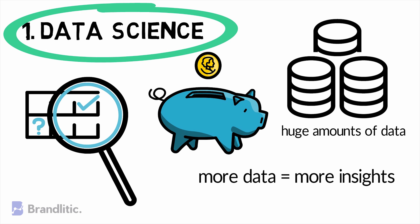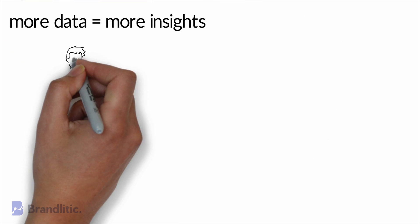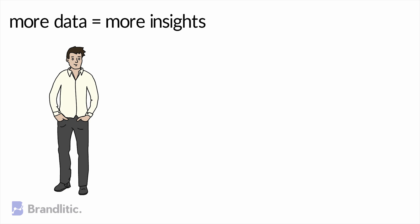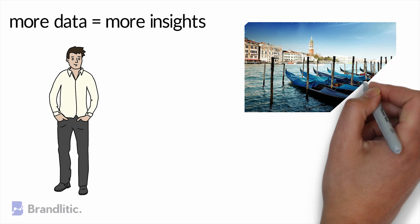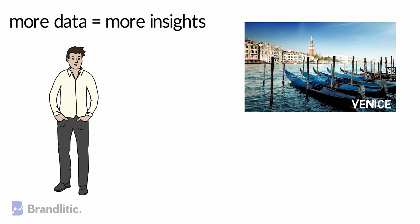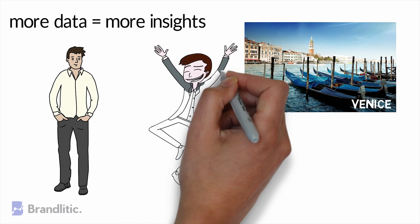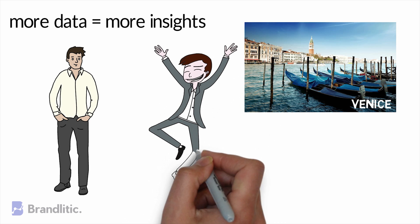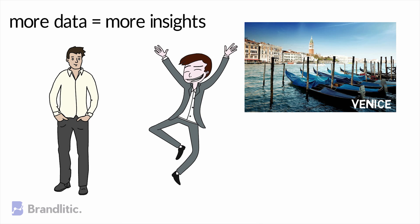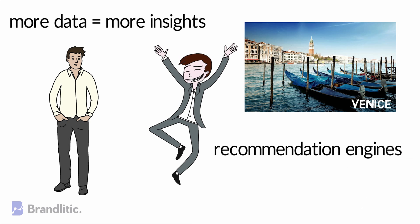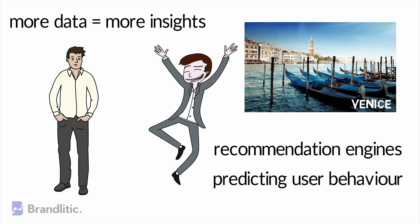For example, you can discover that someone who went to New York City for a vacation is most likely to splurge on a luxury trip to Venice in the next three weeks. And if you're a company offering luxury tours to exotic destinations, you might be interested in getting that person's contact. Just like this, companies are using data science to build recommendation engines, predicting user behavior, and doing so much more.